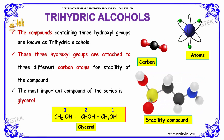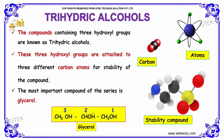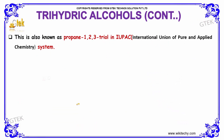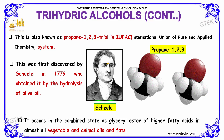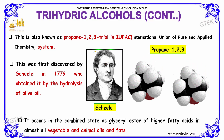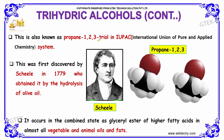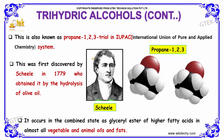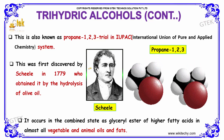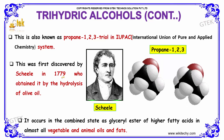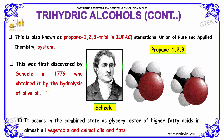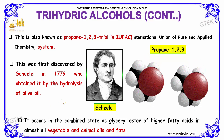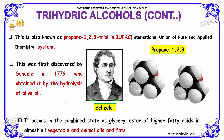The first hydroxyl group is present at the first carbon and the other two at the other two carbons respectively. This compound is also known as propane-1,2,3-triol in its IUPAC naming. It was first discovered by Skelly in 1779, who obtained it by the hydrolysis of olive oil. It occurs in a combined state as glycerol ester of higher fatty acids in almost all vegetable and animal oils and fats.